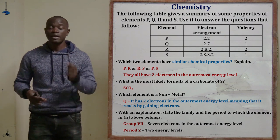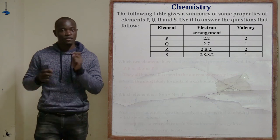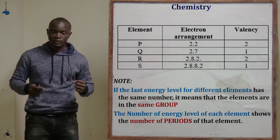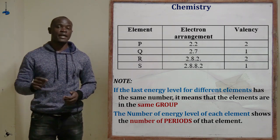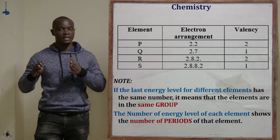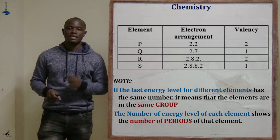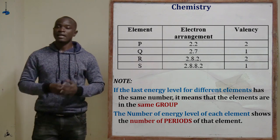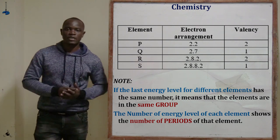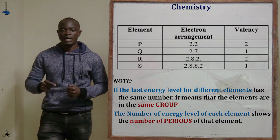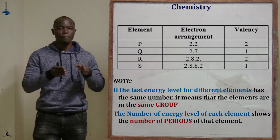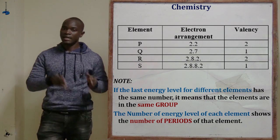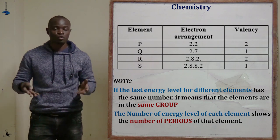Looking at the electronic configurations in the table: element P is 2,2; element Q is 2,7; element R is 2,8,2; and element S is 2,8,8,2. Since the last value in the configuration tells us the group number, elements P, R, and S all end in 2, meaning they all belong to group number 2. Element Q ends in 7, so it belongs to group number 7.